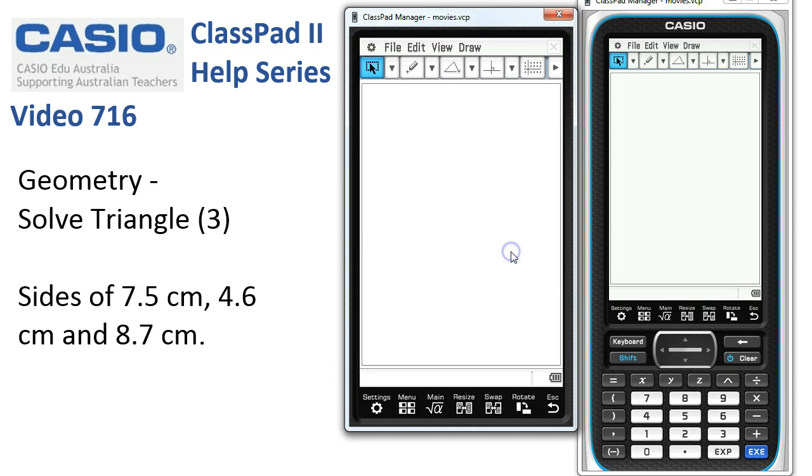We'll tap on the Geometry application and start with a File, New, just in case anything's been going on here. We'll tap the triangle icon, drag out a box to enclose our triangle ABC.